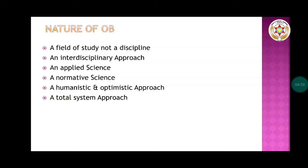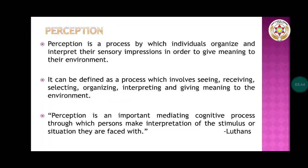OB is also a humanistic and optimistic approach — since it deals with humans, it treats people as thinking, feeling human beings. It is believed that people have an innate desire to be independent, creative, and productive. Finally, OB takes a total system approach, where the living system of an organization is viewed as an enlargement of the individual. This integrative approach takes into account all variables affecting organizational functioning.